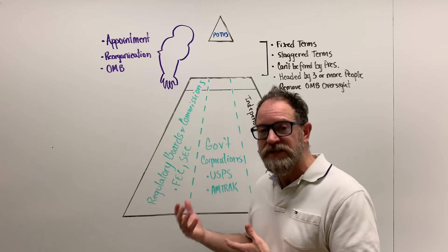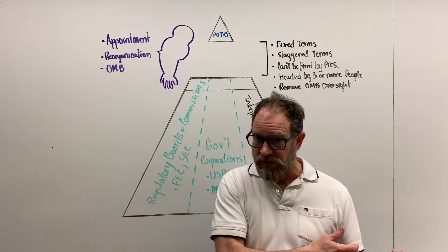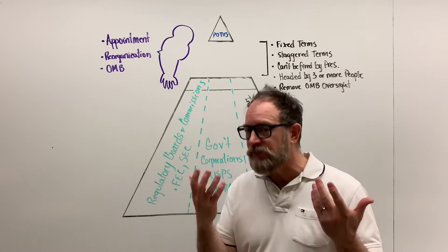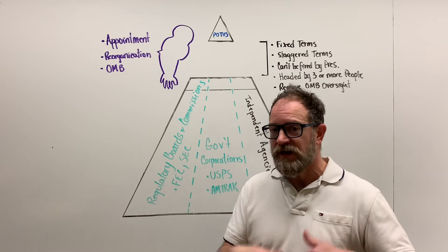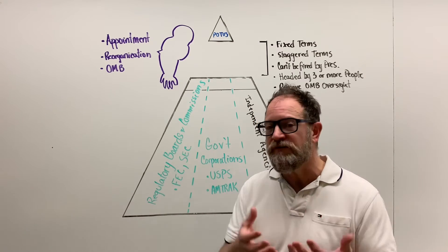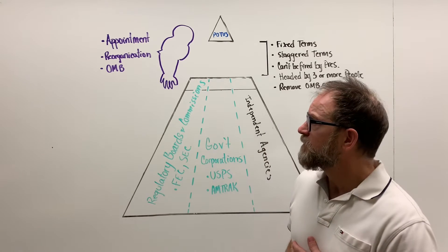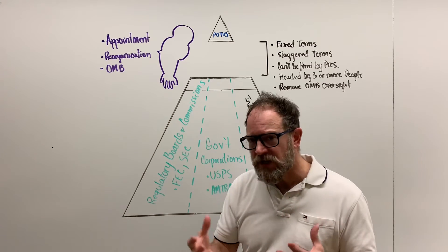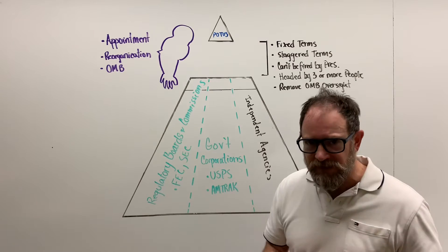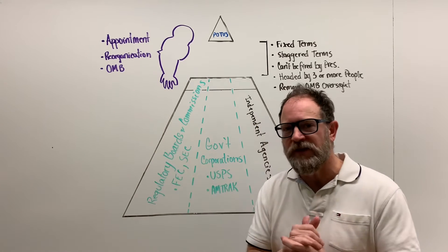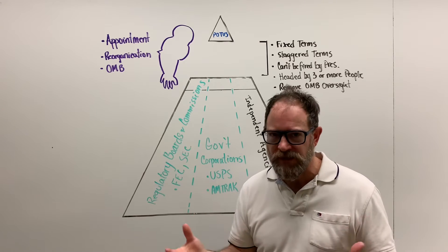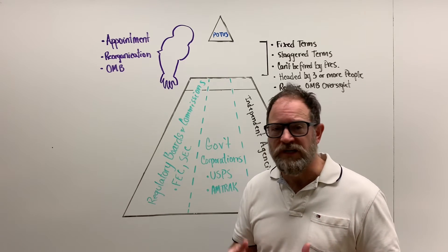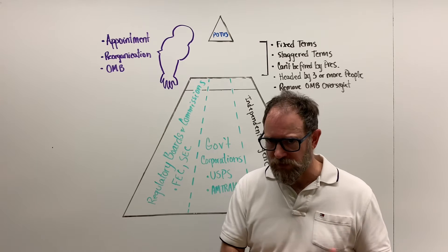The president can also use reorganization, though it's not nearly as effective on this face as on the other face, where he can move agencies in and out of executive departments, give cabinet-rank positions, and perform other chief administrator tasks. Finally, there is the Office of Management and Budget - the president can control this face to some extent by having agencies submit their budget to the OMB and having the OMB approve every proposed regulation and rule governing how business and the economy operate.